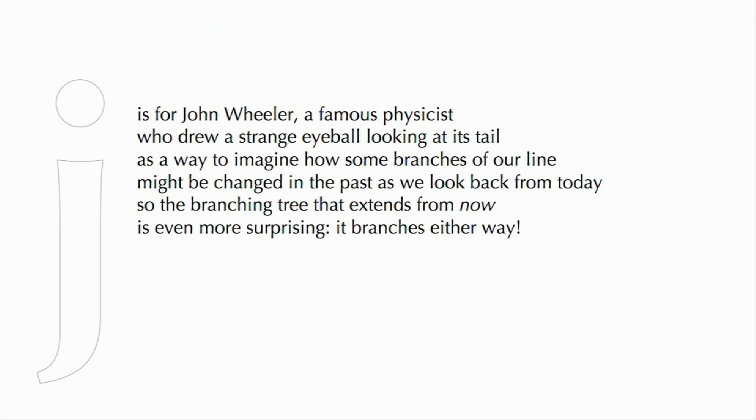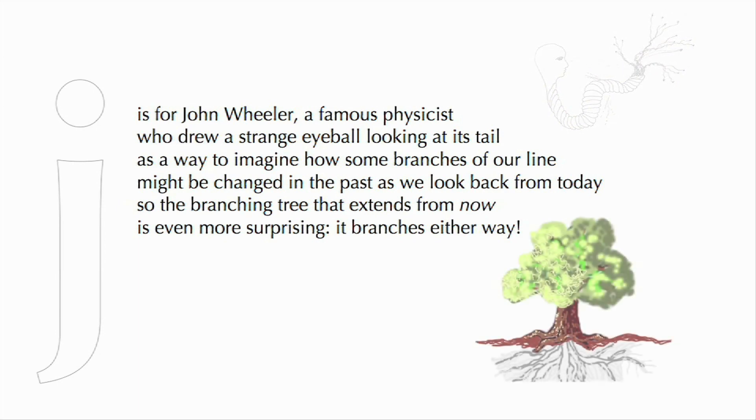J is for John Wheeler, a famous physicist who drew a strange eyeball looking at its tail, as a way to imagine how some branches of our line might be changed in the past as we look back from today. So the branching tree that extends from now is even more surprising. It branches either way.